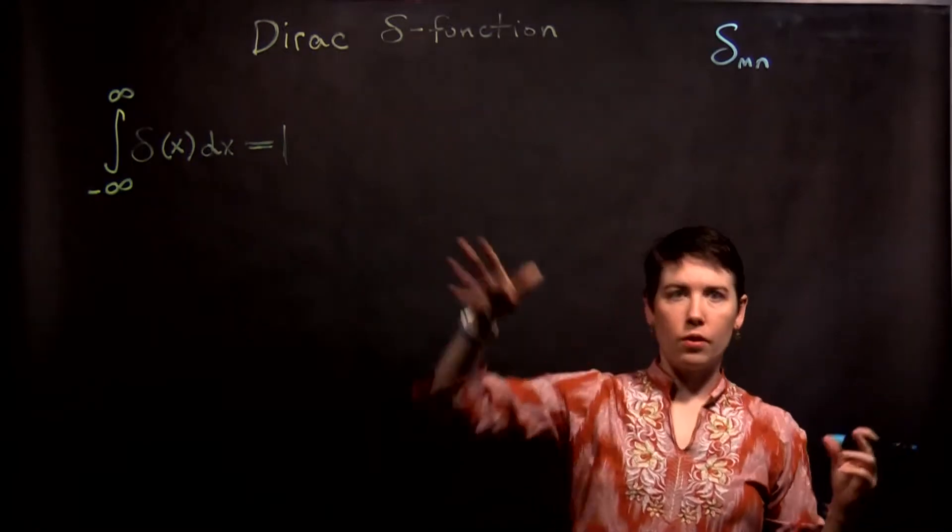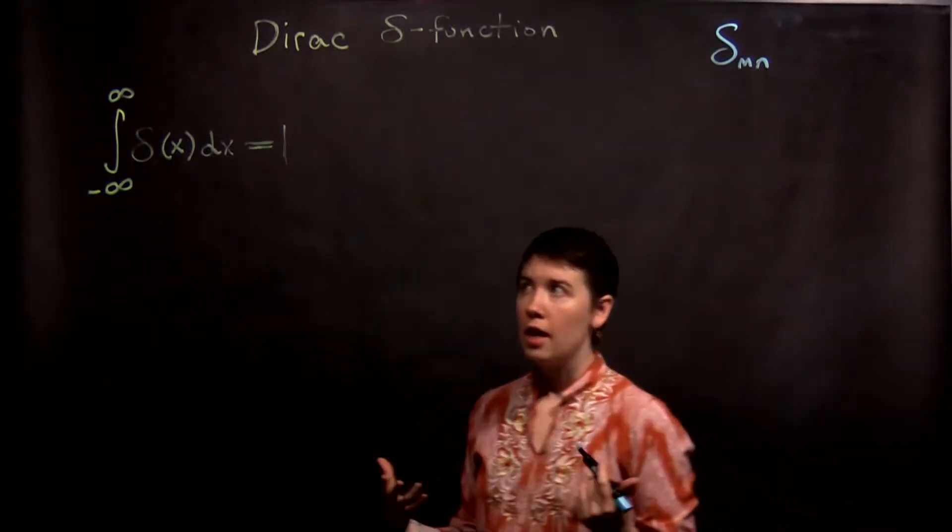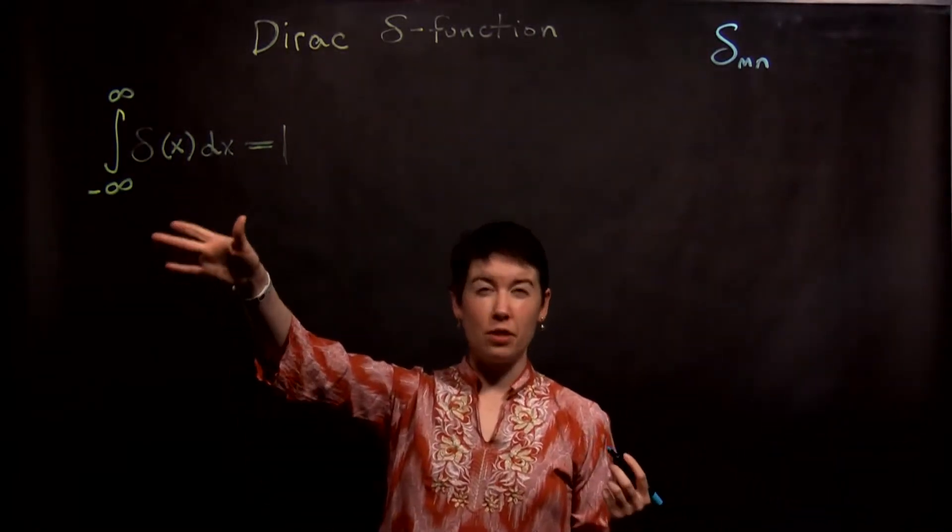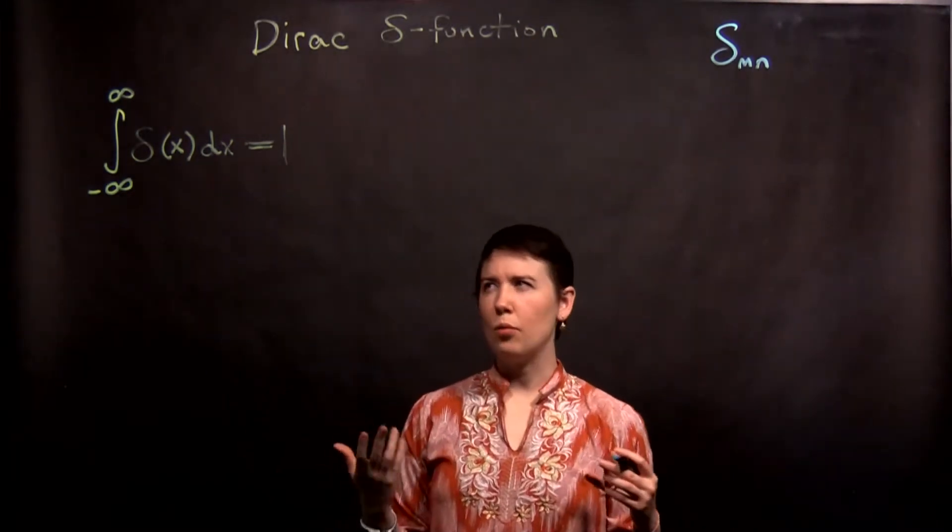The Dirac delta function is more of a continuous function. And this is the best definition of it. Now one thing that's a little bit tricky is to say, what does this mean?